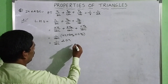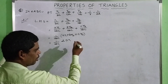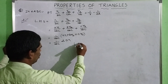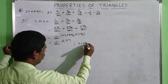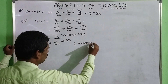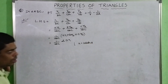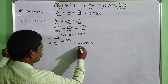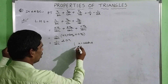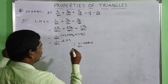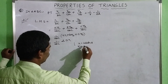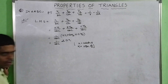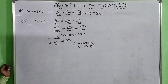From the sine rule, A/sin A = 2R, therefore A = 2R·sin A. The formula for R1 is R1 = S·tan(A/2).